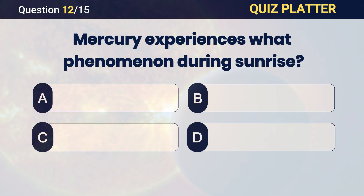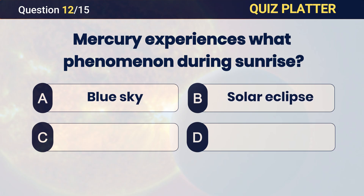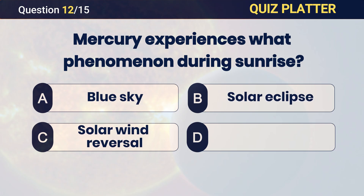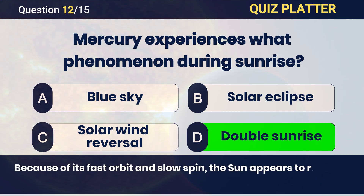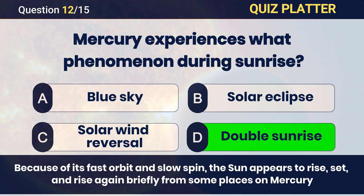Mercury experiences what phenomenon during sunrise? Answer: D — double sunrise.